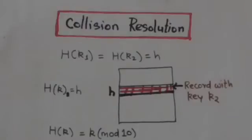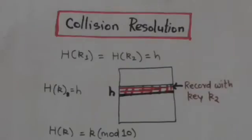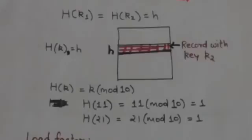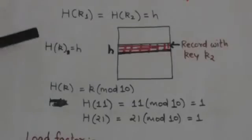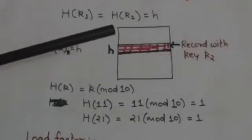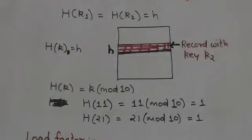Hello friends, welcome back. In this tutorial we will study about collision resolution and hashing. In the previous tutorial we studied about hashing, so in this tutorial we will study about collision resolution. Sometimes two keys have the same hash value for a particular hash function — this situation is called collision. When we try to store a record with key K in memory, but the hash address for key K is already occupied by some other key's record, that is a collision.